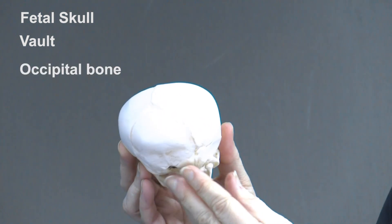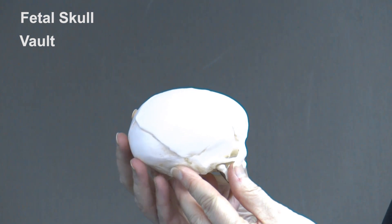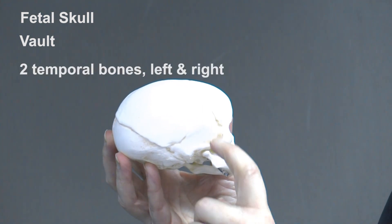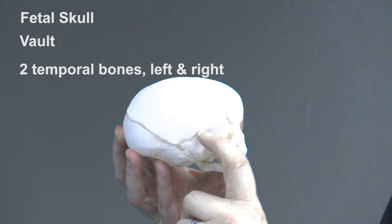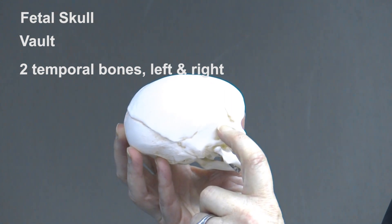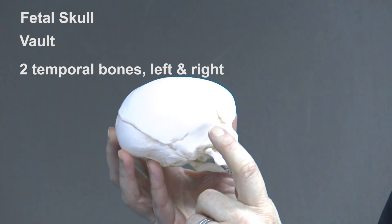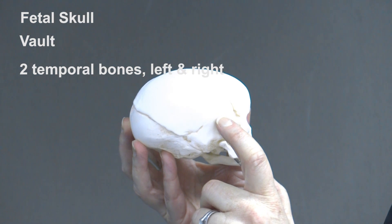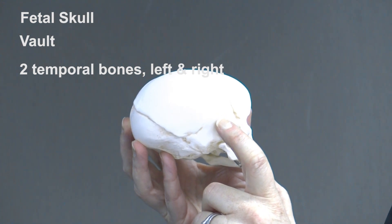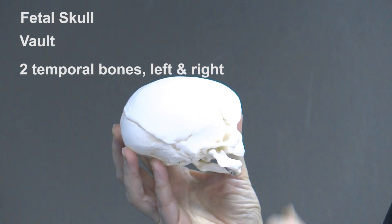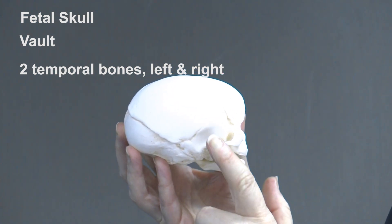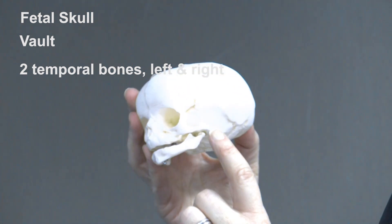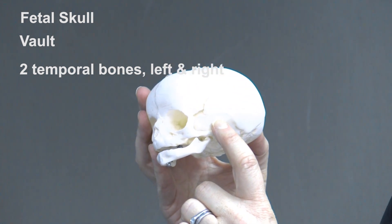The final two bones that make up the vault are the temporal bones. It's just the superior aspect of the temporal bones which form part of the vault — these small areas here. Again, we have a left and a right temporal bone.